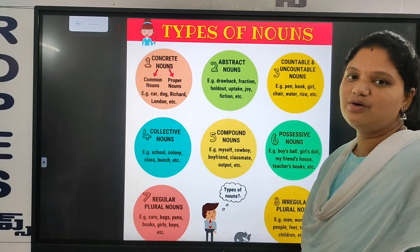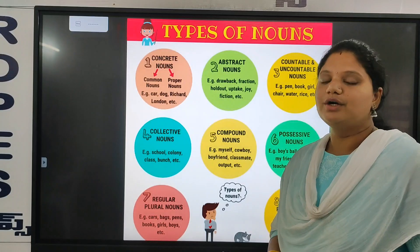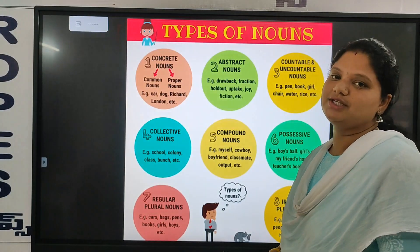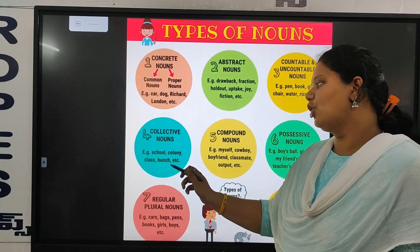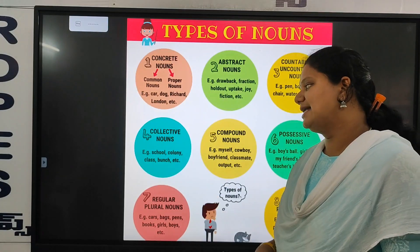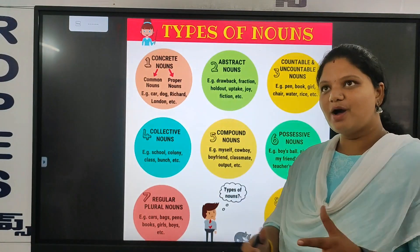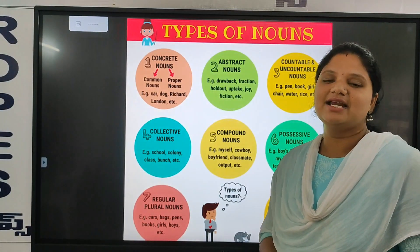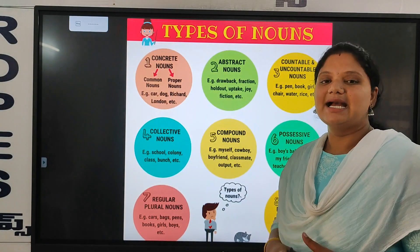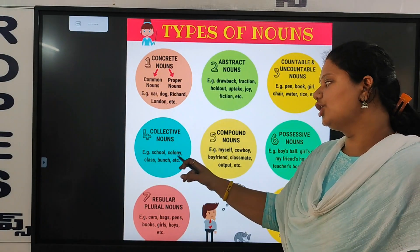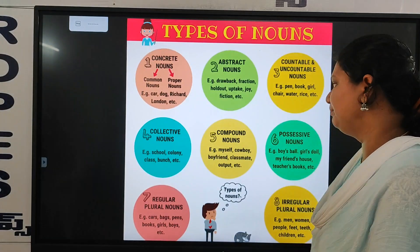Next one is collective nouns. Collective nouns are nothing but school, colony, class, bunch. We have a group of things that combine to make one — we consider that as collective nouns: school, colony, class, and bunch.